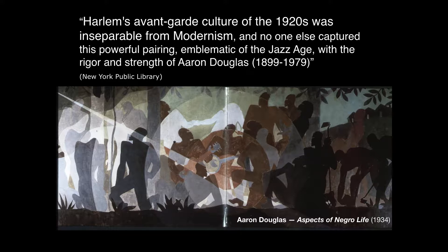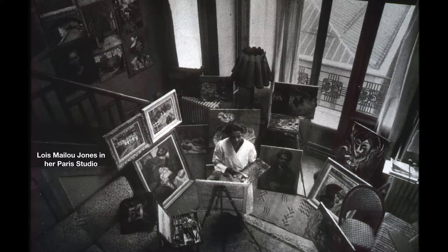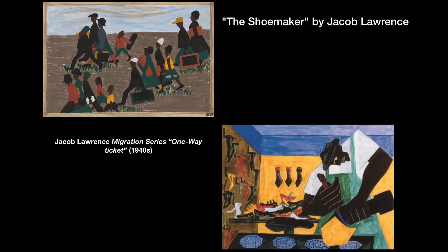Harlem's avant-garde culture of the 1920s was inseparable from modernism, and no one else captured this powerful pairing, emblematic of the jazz age, with the rigor and strength of Aaron Douglas. However, it wasn't just Aaron Douglas—it was all of the Harlem Renaissance artists, whether they lived in Chicago, San Francisco, Oakland, Washington DC, or Paris. I spoke of Jacob Lawrence in my earlier lectures. He worked in the latter part of the Harlem Renaissance, but his paintings and collages reflected ideas of defining the South from the point of view of Black American experience.